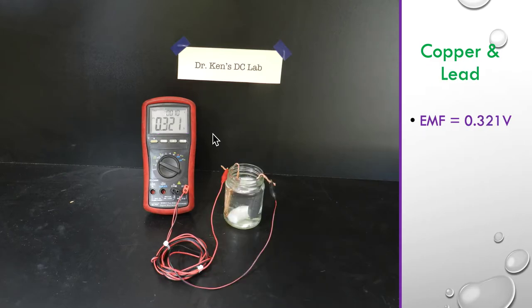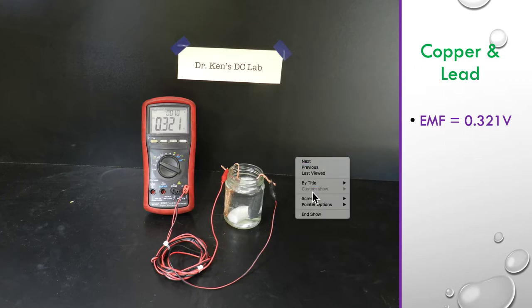Our third one which was the copper and the lead and being an avid fisherman wasn't too hard to find a nice big lead sinker. So there's my lead sinker and copper and again 0.321 of a volt is the reading again still substantial.